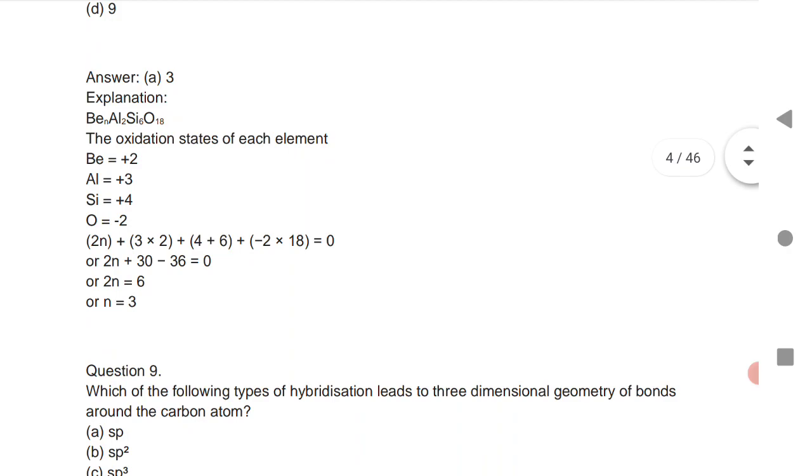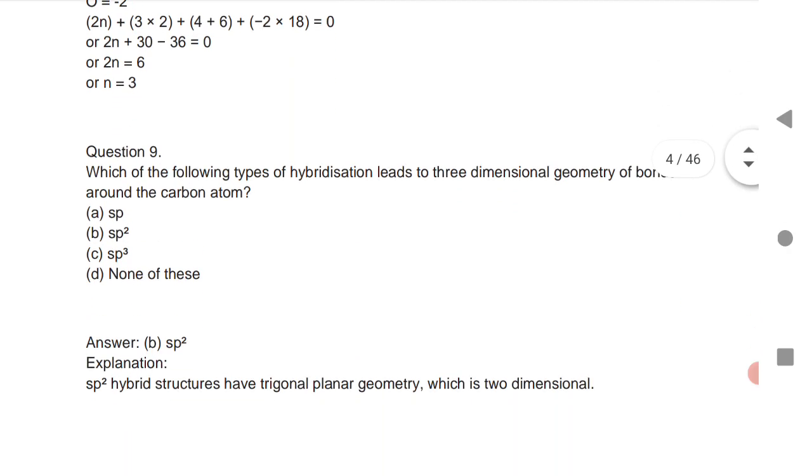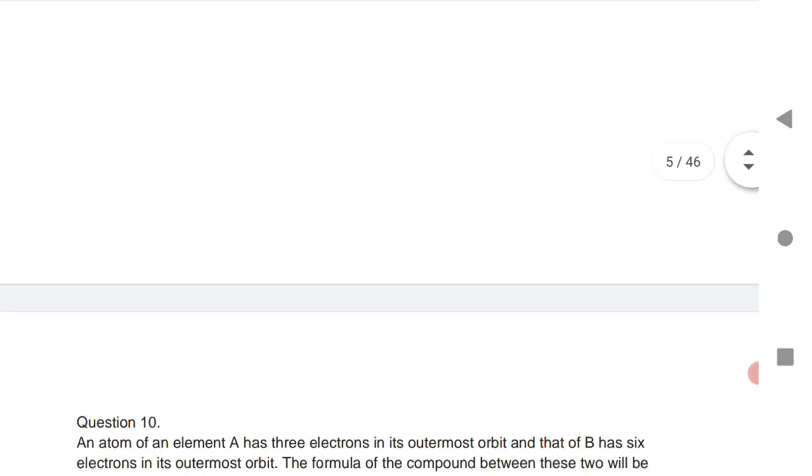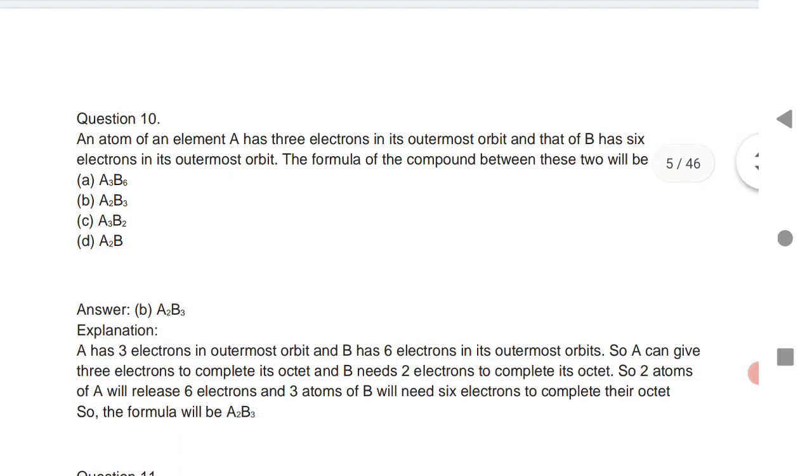Very important question: which of the following types of hybridization leads to three-dimensional geometry of bonds around the carbon? sp2 hybridization.